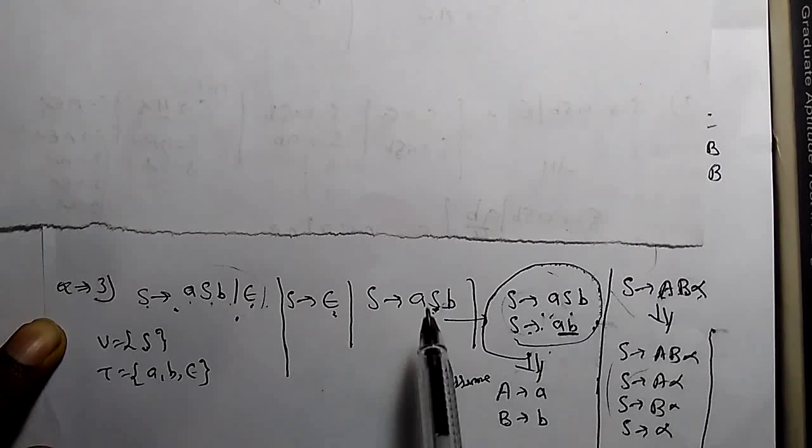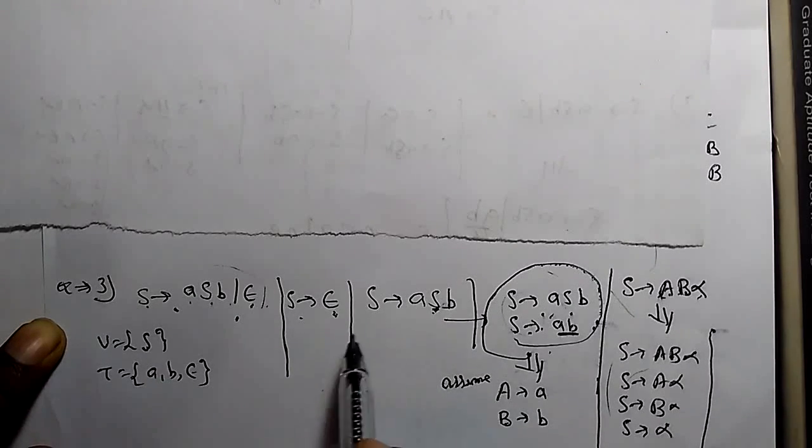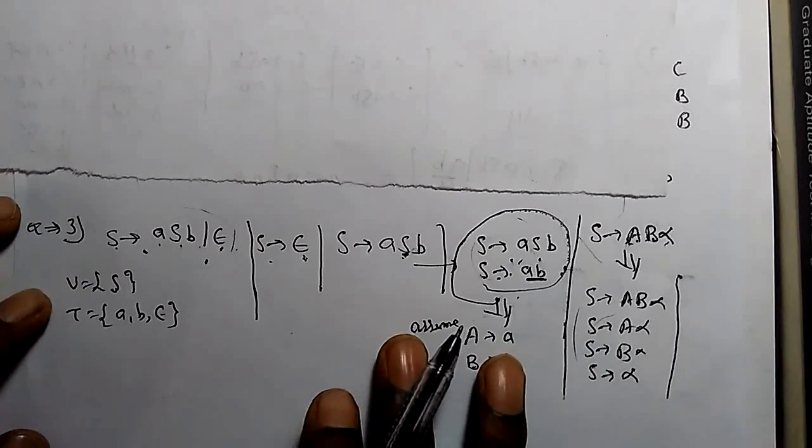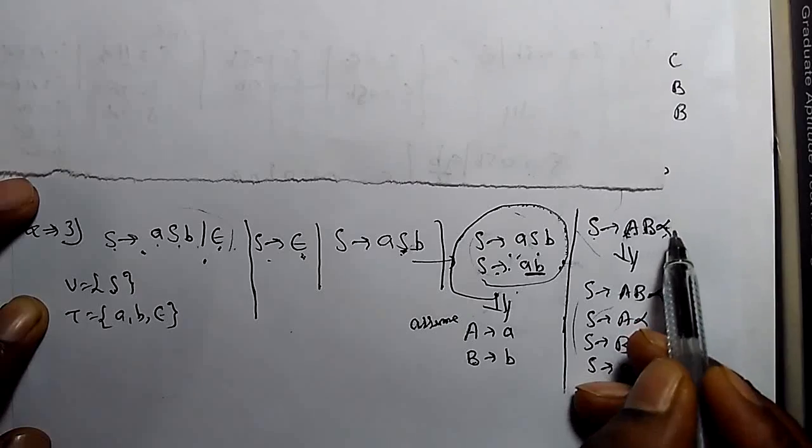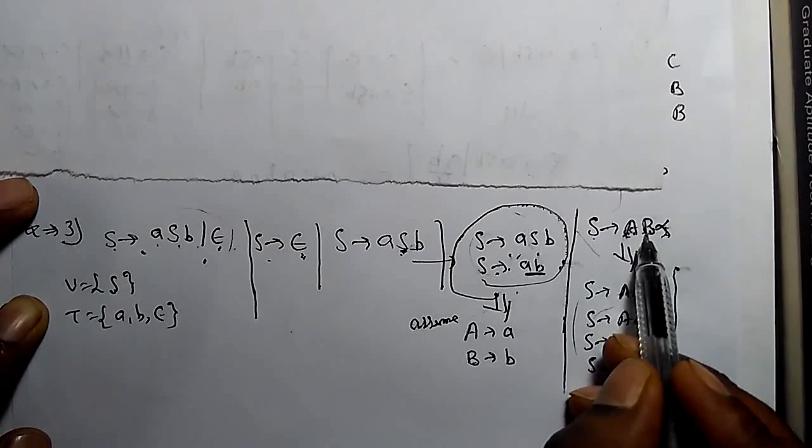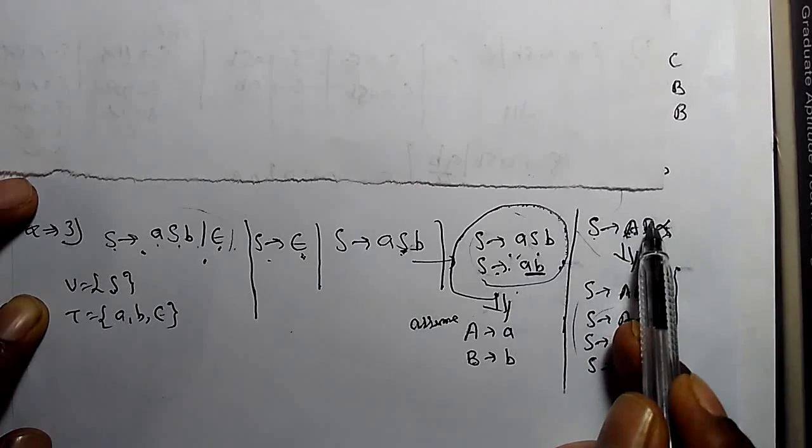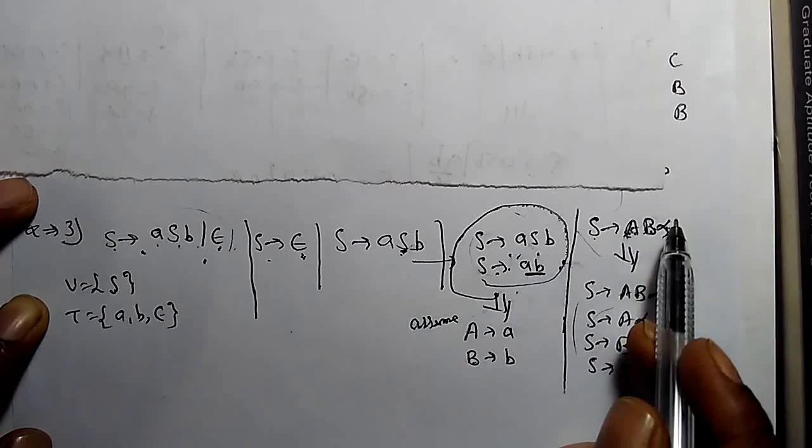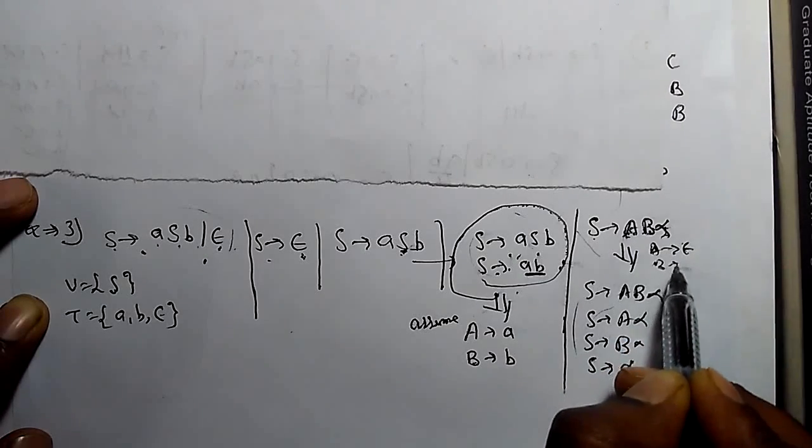For null elimination, S derives epsilon. There is an algorithm we have already studied: if S derives AB alpha, where alpha is a terminal and AB are variables, and A or B derives epsilon.